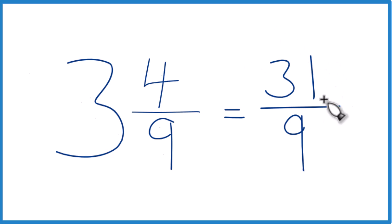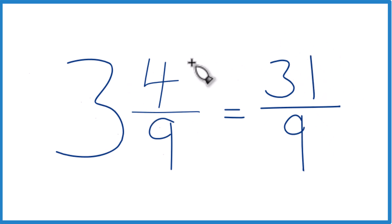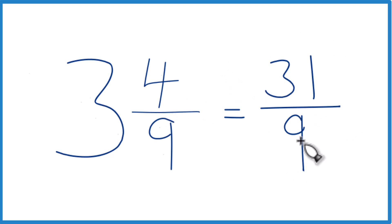It's improper because the 31, the numerator, is larger than the denominator. And these are equal — they're equivalent. They have the same value; it's just that we're representing it here as an improper fraction.